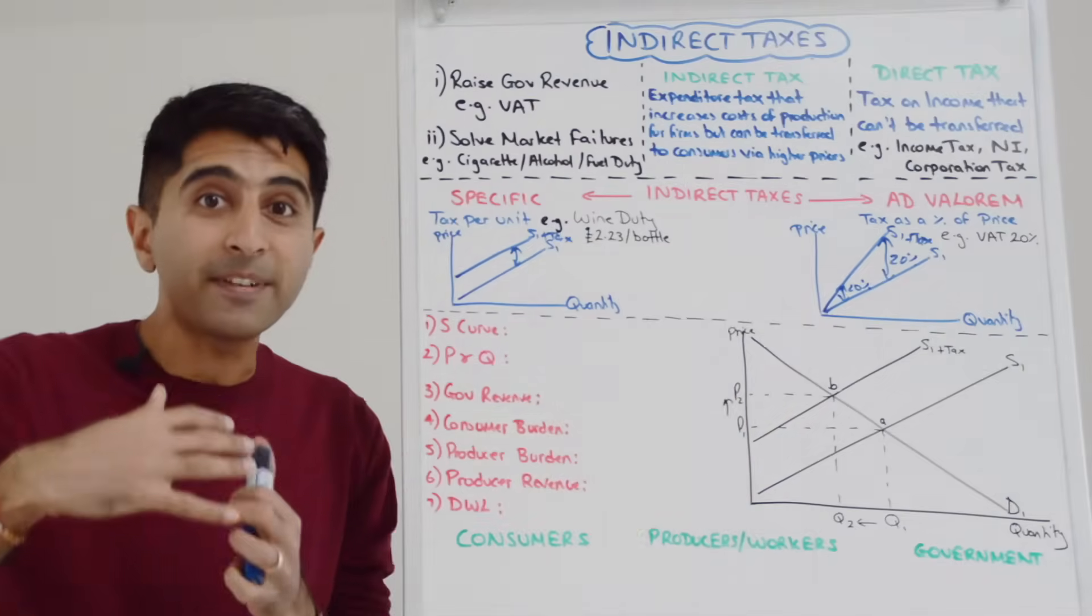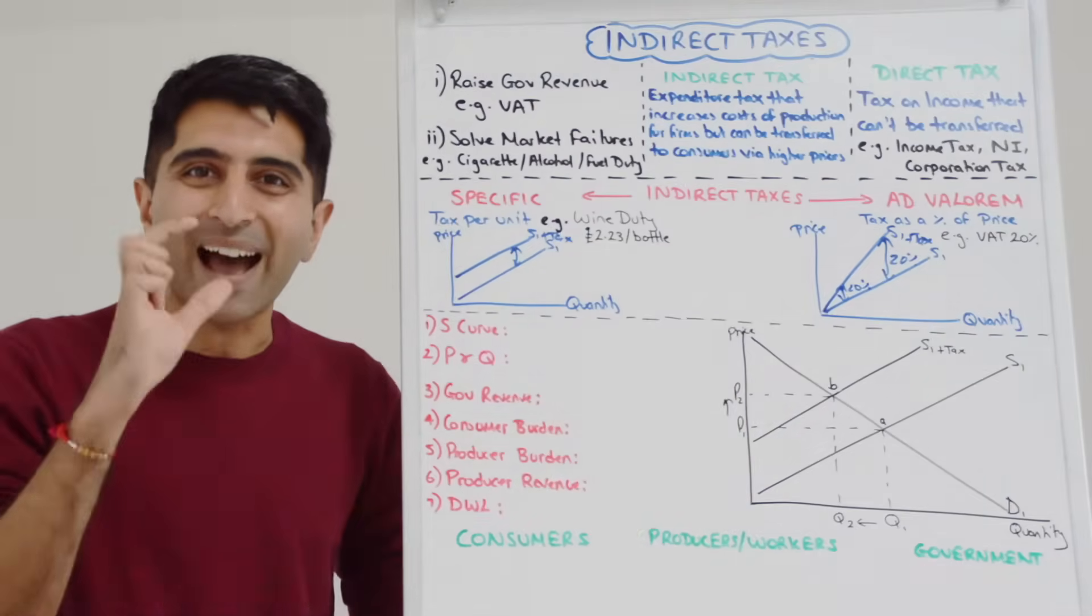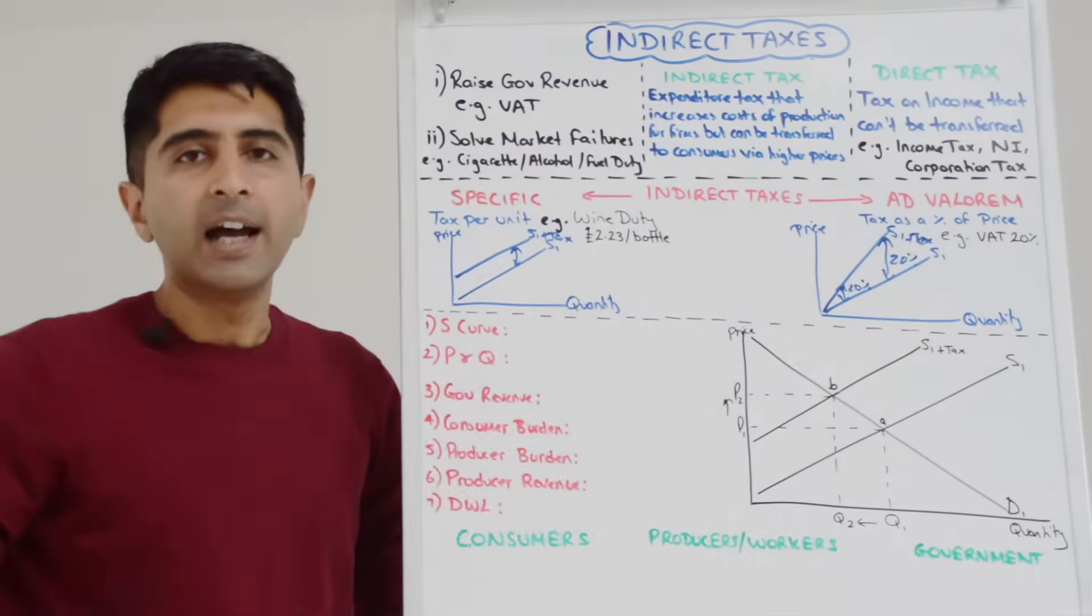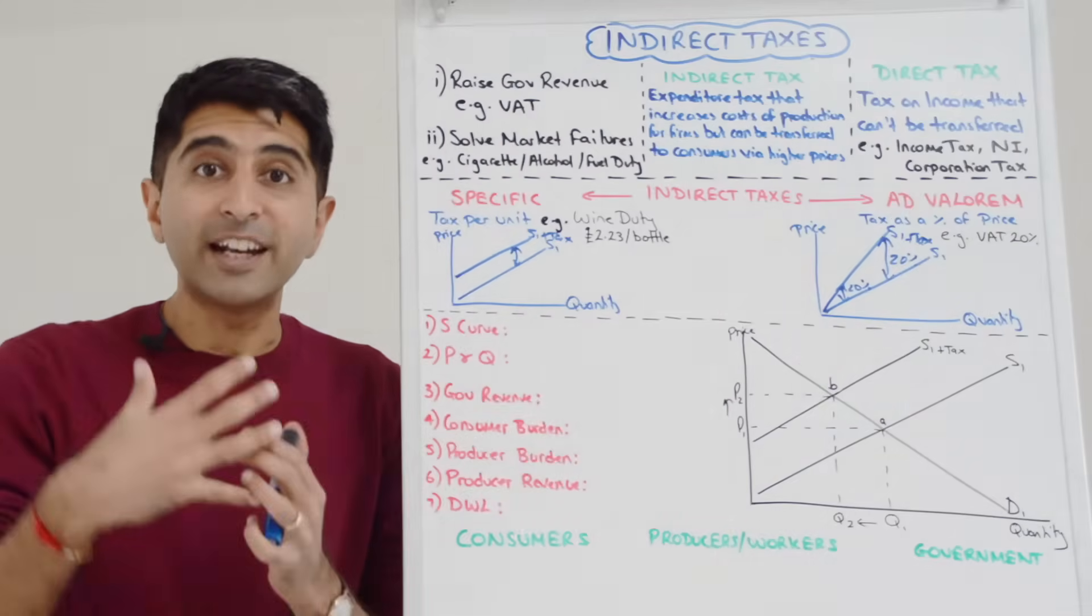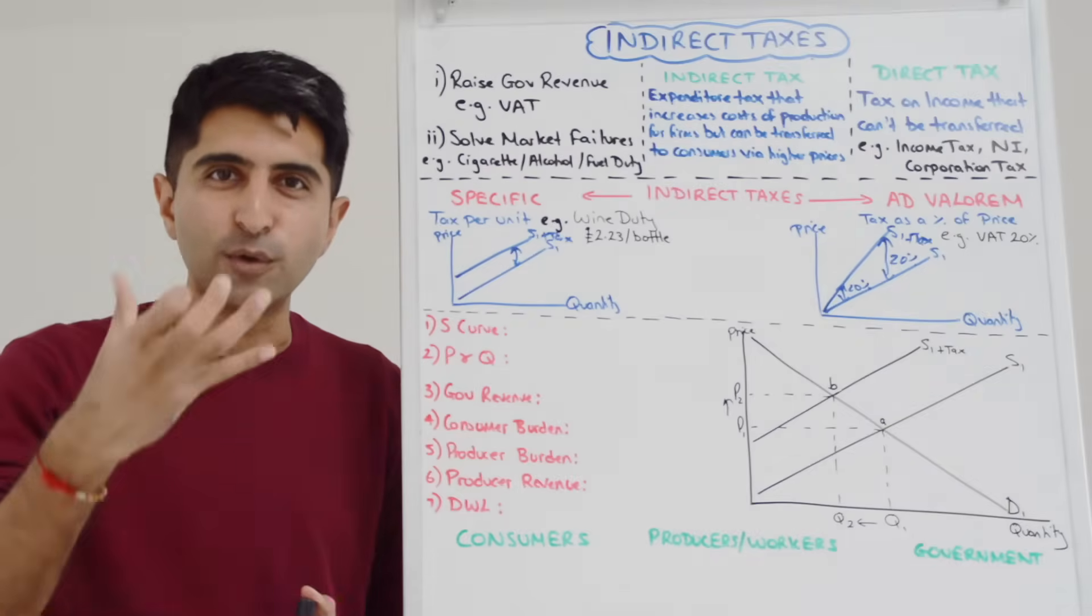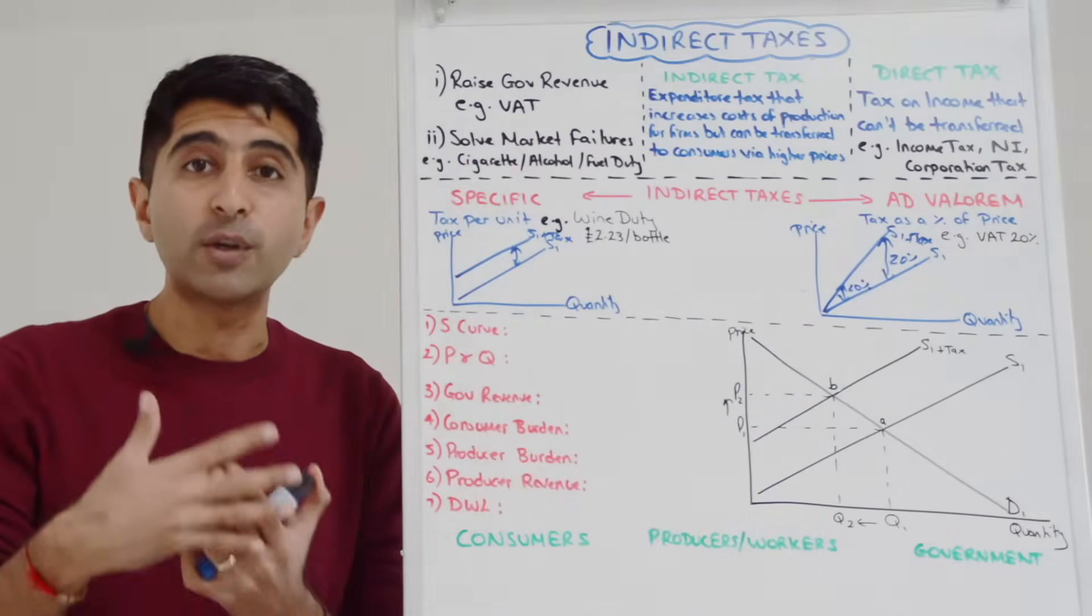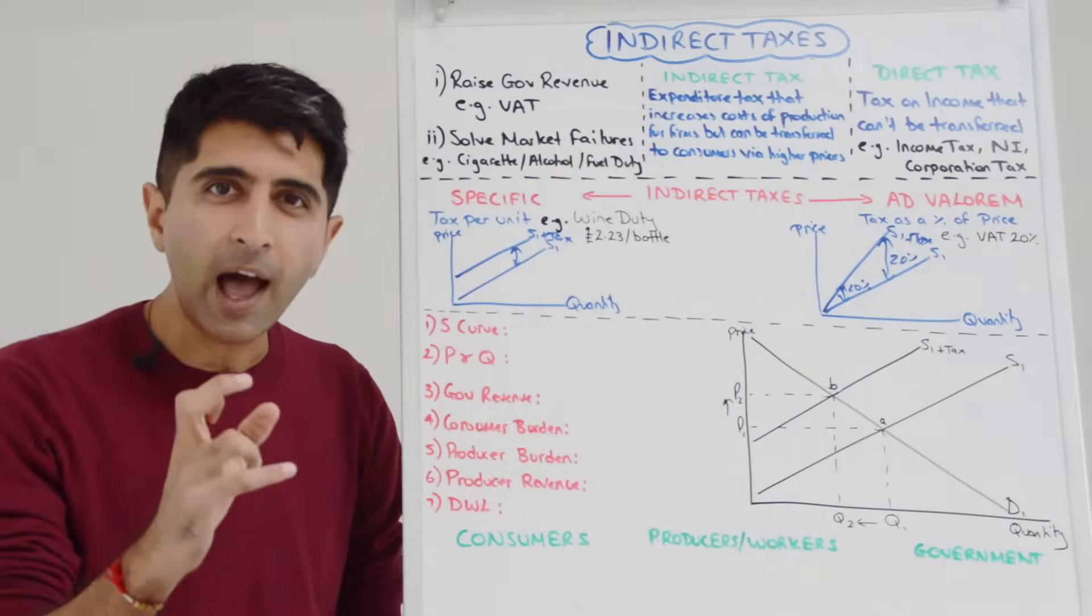Well we're trying to say that 20% of a high price is a high number. So 20% over here let's say the price is £100, that's going to generate £20 worth of revenue for the government.